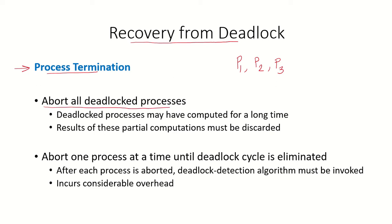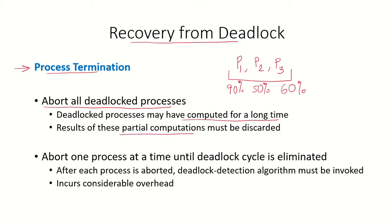Either we abort all deadlocked processes. So in this case all processes P1, P2, P3 which were involved in the deadlock will all be aborted. But the problem is that these processes may have computed for a long time. Let's say P1 had already finished 90% of its tasks, P2 had finished 50% of its computations and P3 had finished 60% of its computations. So aborting them would be expensive and the results of all these partial computations will have to be discarded.